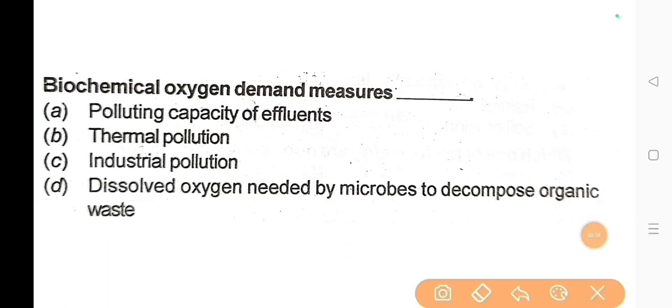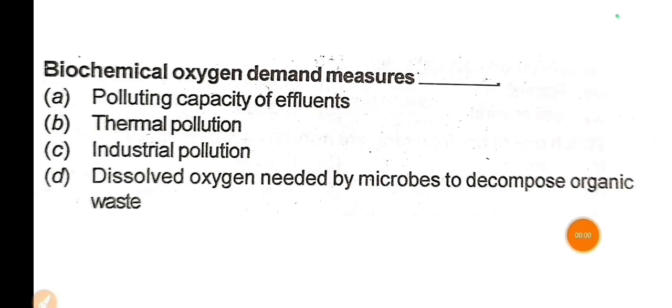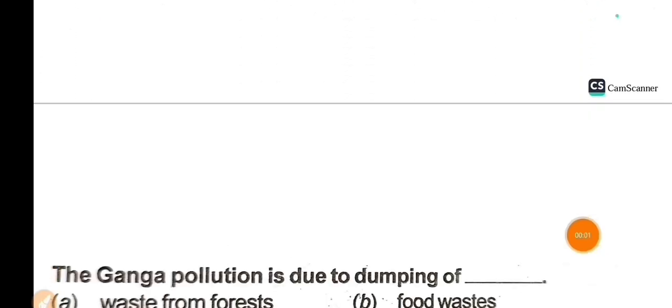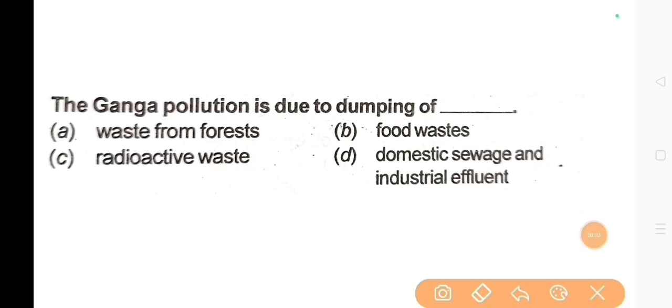Next question: Biochemical oxygen demand measures? The correct answer is Option B: Dissolved oxygen needed by microbes to decompose organic waste. Next question: The Ganga pollution is due to dumping of? The correct answer is Option D: Domestic sewage and industrial effluent.